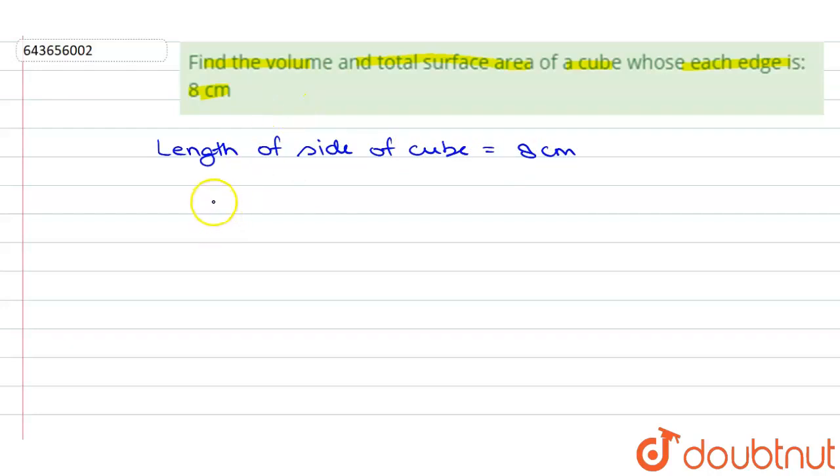First we will find the volume. The volume formula for cube is given by side cubed, which means side times side times side. Here the length of side is given as 8, so we will find the value of 8 cubed.